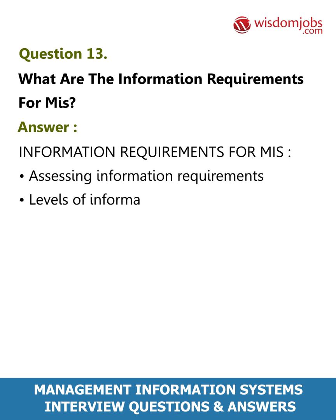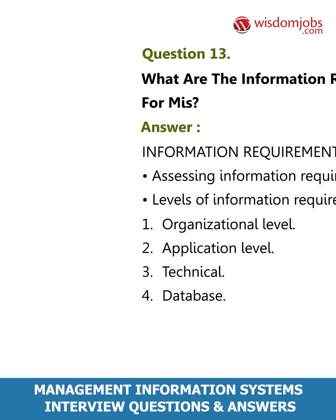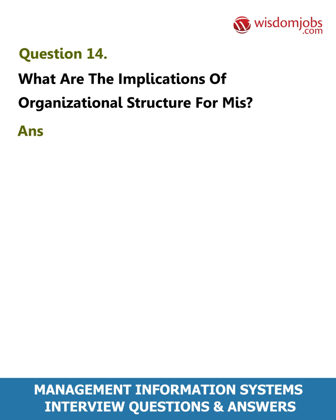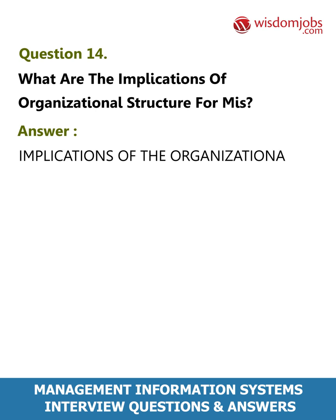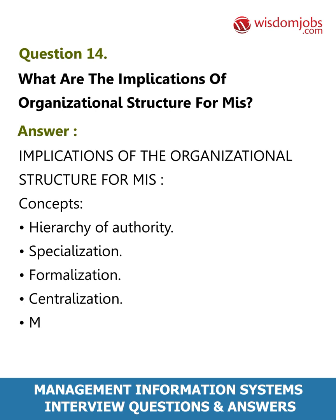Answer: Information requirements for MIS — assessing information requirements. Levels of information requirements: 1. Organizational level, 2. Application level, 3. Technical, 4. Database. Question 14: What are the implications of organizational structure for MIS?